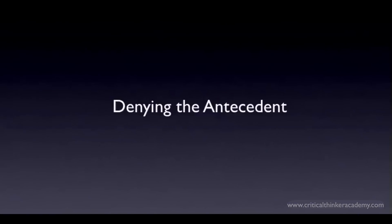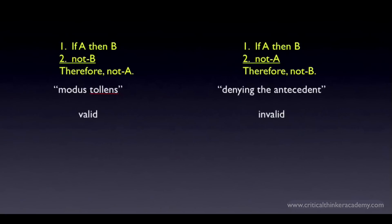Denying the antecedent is the name of another invalid conditional argument form. You should think of this as the invalid version of modus tollens. On the left is modus tollens, which is valid. On the right is the invalid form commonly called denying the antecedent. There's no mystery why it's called this — you're denying the antecedent and trying to infer the denial of the consequent.